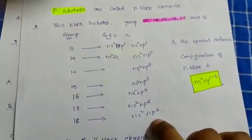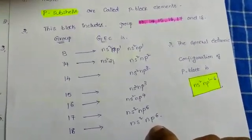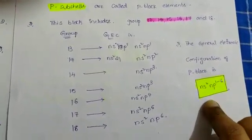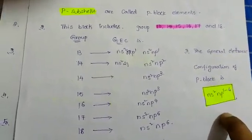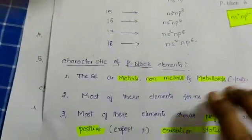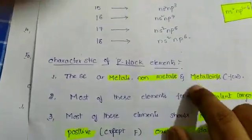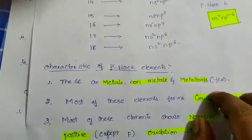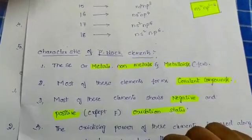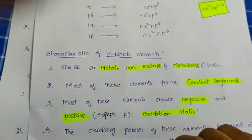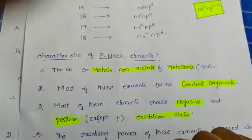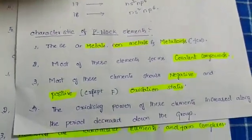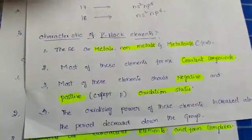The general electronic configuration of P-block elements is NS2 NP1 to 6. Characteristics of P-block elements: these are metals, non-metals, and metalloids. Most of these elements form covalent compounds. Most of these elements show negative and positive oxidation states.